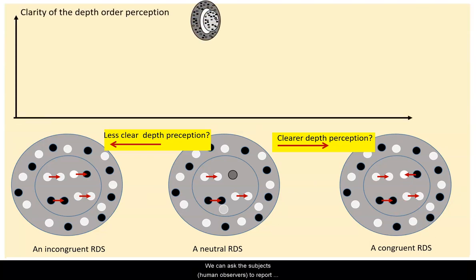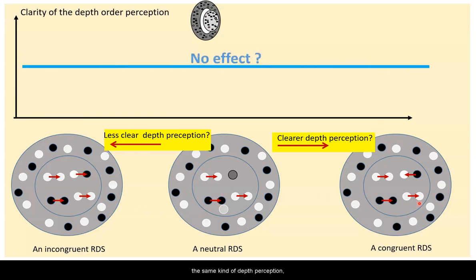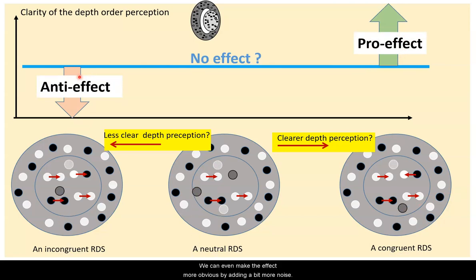We can ask the subject to report whether these three types of stereograms give the same kind of depth perception, whether they look equally clear, or whether this one looks even clearer in depth and that one looks less clear in depth. We can even make the effect more obvious by adding a bit more noise.